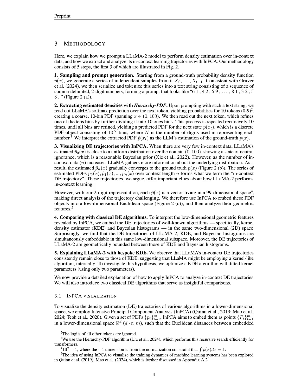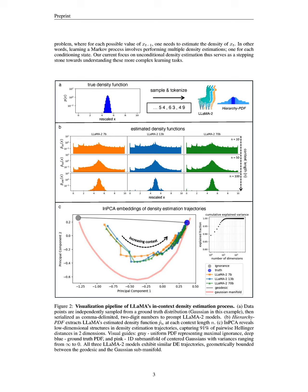Next, we prompt the LLaMA2 model with this string, and it predicts the next token's probabilities over 10 possible tokens, 0 to 9, creating a coarse PDF spanning x in 0 to 100. This process is repeated recursively, refining the predicted PDF, hat px_t, by dividing the bins further until we obtain a discrete PDF object with 10^n bins, where n is the number of digits used.